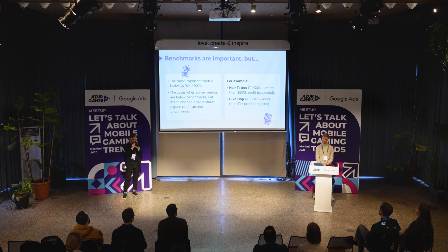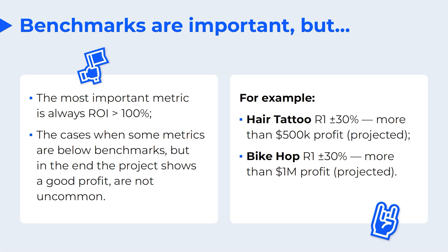For example, we have the Herita 2 project and Bike Hope, which have Day 1 retention of nearly 30% only, but they can make great profit by the end of their life cycle.